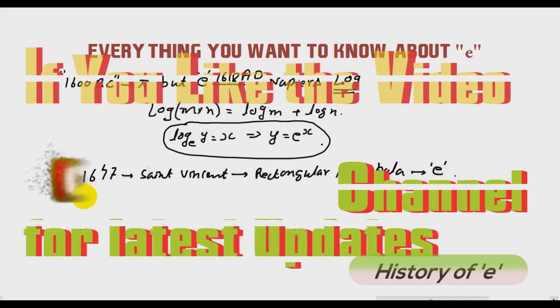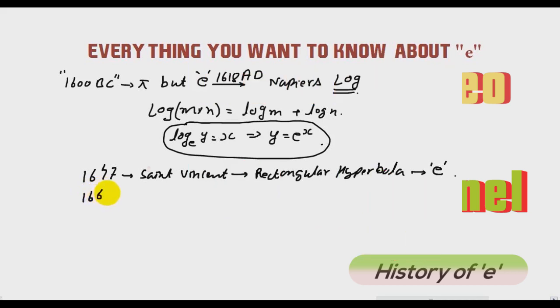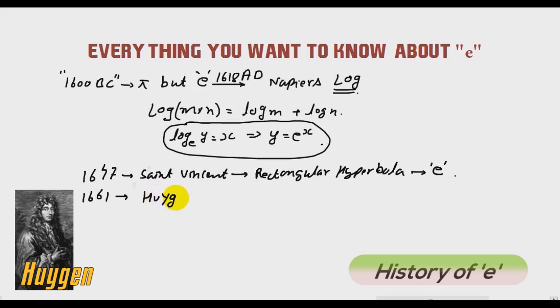Similarly in year 1661, another famous engineer Huygens used e for the first patent of mechanical clock. But he also was not able to recognize e. He was able to calculate e up to the 17th decimal place.